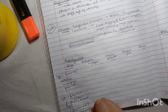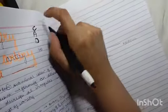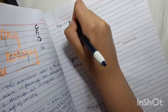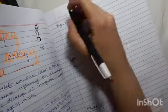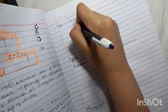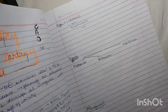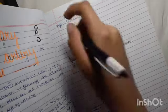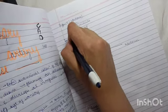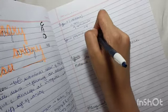Stage 4 is atheroma with a core of extracellular lipid. Stage 5 is fibroatheroma with a lipid core and fibrotic layer around it.